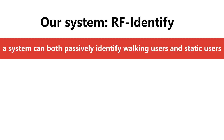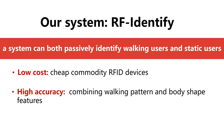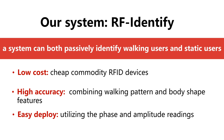Hence, we present RF-Identity. The system can both passively identify walking users and static users. RF-Identity has three advantages: first, low hardware cost — it works on cheap commodity RFID devices; second, high accuracy — it combines the unique walking pattern features and the body shape features of a user; third, RF-Identity is easy to deploy.